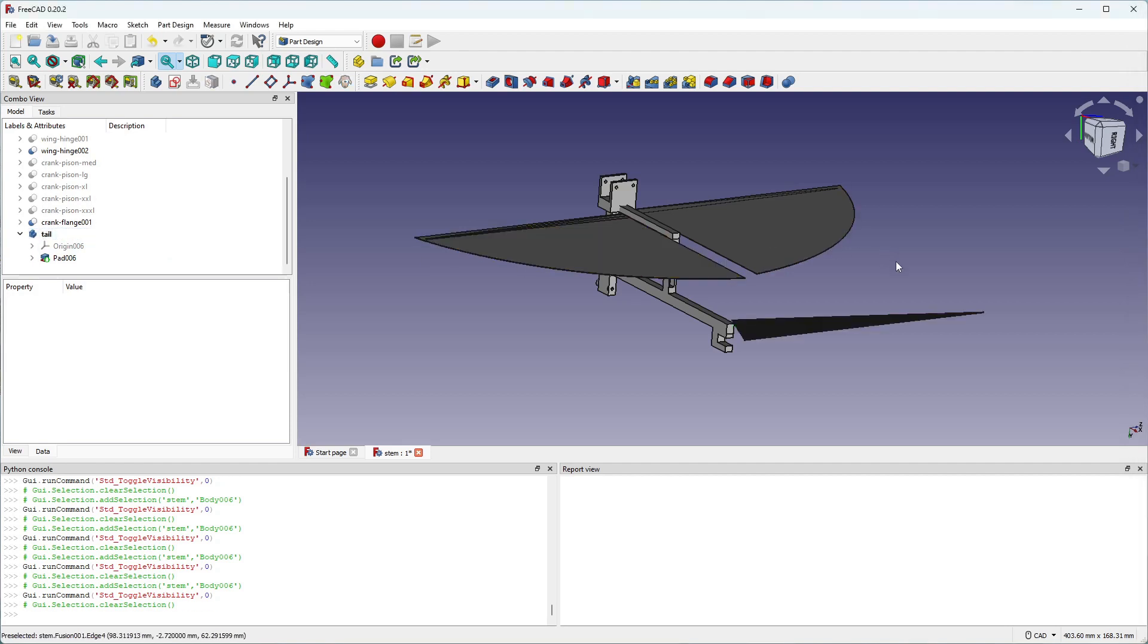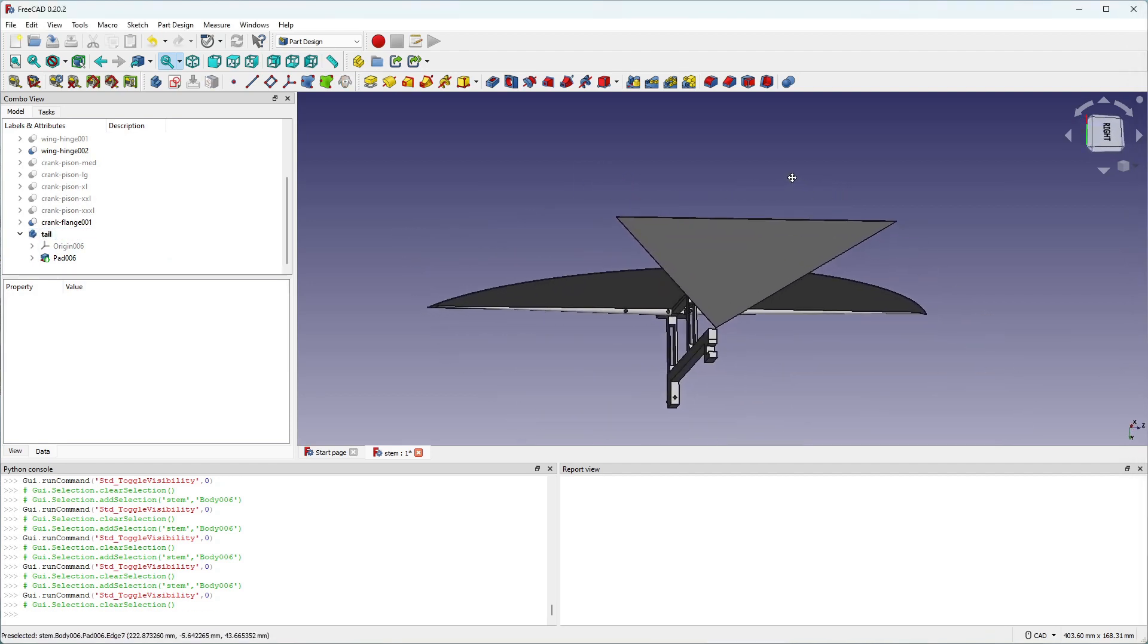I'm going to add a tail to help create stability. So while the ornithopter's wings are flapping, the tail can help provide the stability it needs to stay in the air.